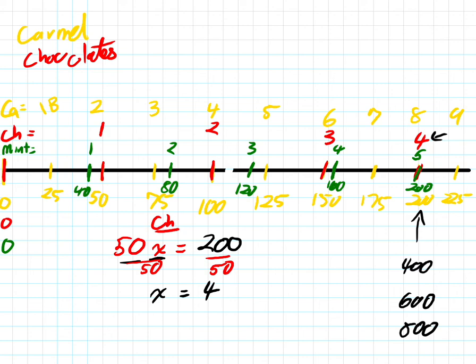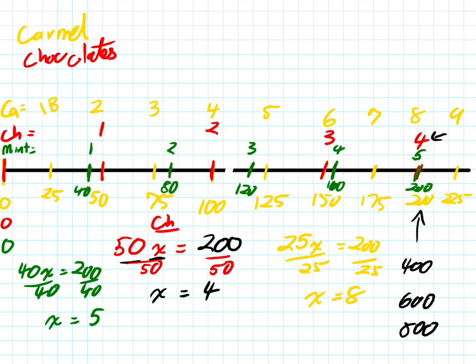We know that our caramels, there's 25 in each box, and we need these to go to 200. We divide both by 25, and our counting will have told us this also. In this case, X is equal to eight boxes. And finally, our mints, there are 40 of those in each box, and we need to get to 200. We divide both sides by 40, and we end up at five for mints.